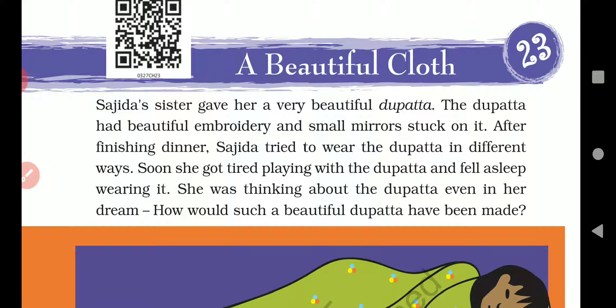So here in this chapter we will discuss about cloth, different types of clothes also. So let's start. Sajida's sister gave her a very beautiful dupatta. So bachos, a girl Sajida, whose sister gave her a beautiful dupatta. Dupatta means chunni. The dupatta had beautiful embroidery and small mirrors stuck on it.